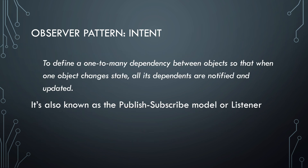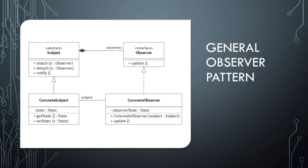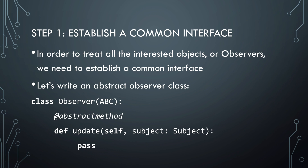The observer pattern allows you to notify other objects when an object changes. This is also known as the listener pattern or the pub-sub model. This is what the observer pattern looks like in UML. There are two abstract classes or interfaces: the subject and the observer. The subject maintains a list of observers and notifies them via an update method that an event occurred. The idea is that we need to establish a common interface for all objects — all observers that are interested.